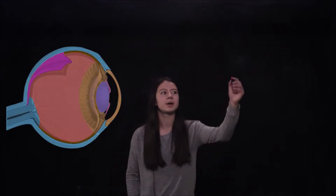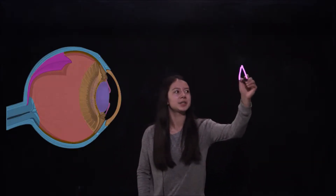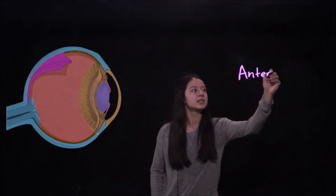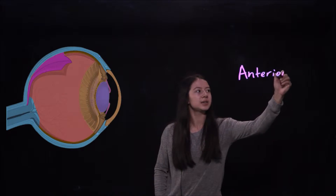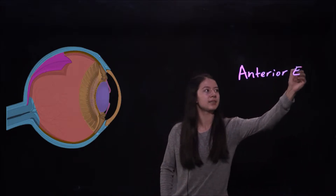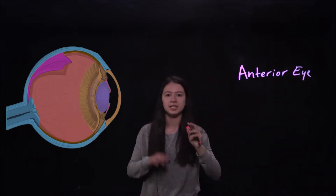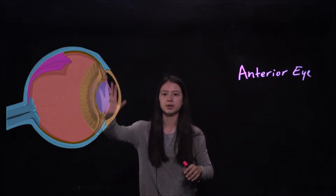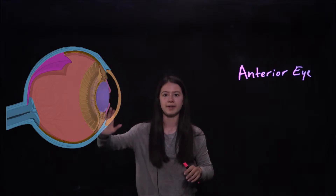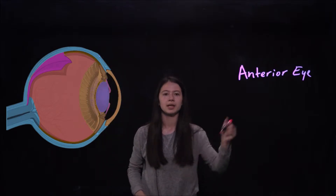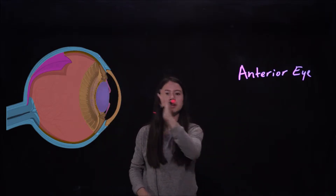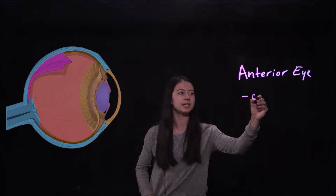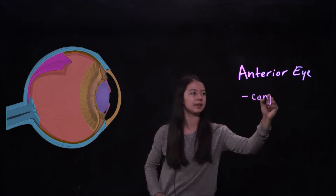Now we're going to talk about the anterior eye. The anterior eye is everything in the anterior region, the front part of the eye. Starting from outside in, we're going to look at the conjunctiva.